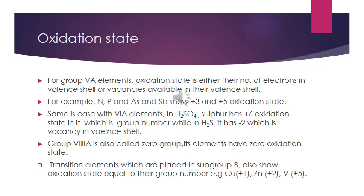For example, nitrogen, phosphorus, and arsenic show +3 and +5 oxidation states. The +5 oxidation state is the number of electrons in the valence shell, which equals the group number. The +3 corresponds to the vacancy available in the valence shell. Group 6A elements follow the same case: in H2SO4, the oxidation state of sulfur is +6 (the group number), but in H2O2 sulfur shows -2, the vacancy in the valence shell.